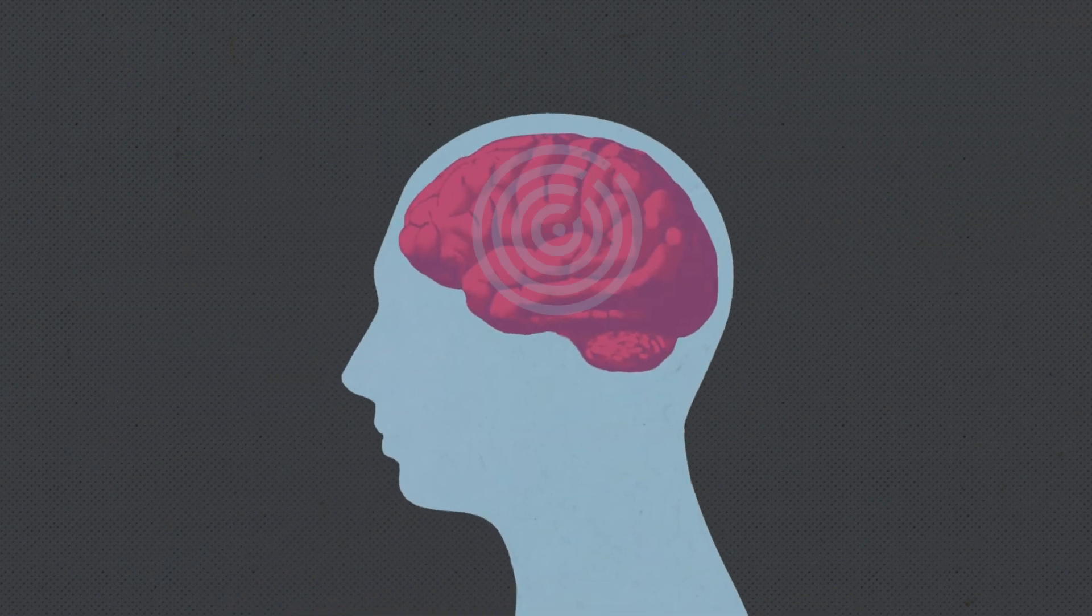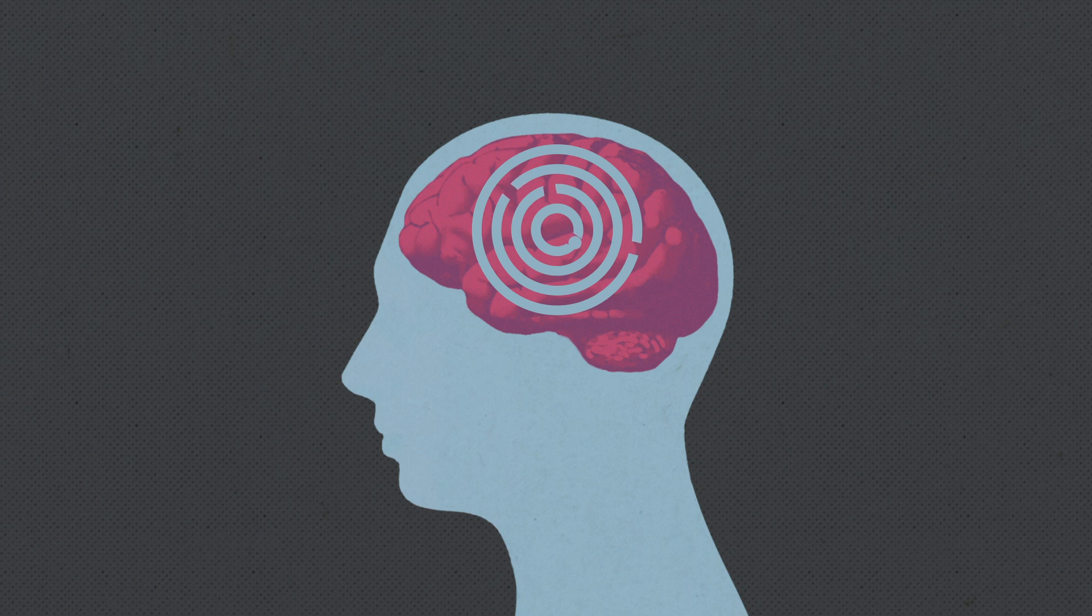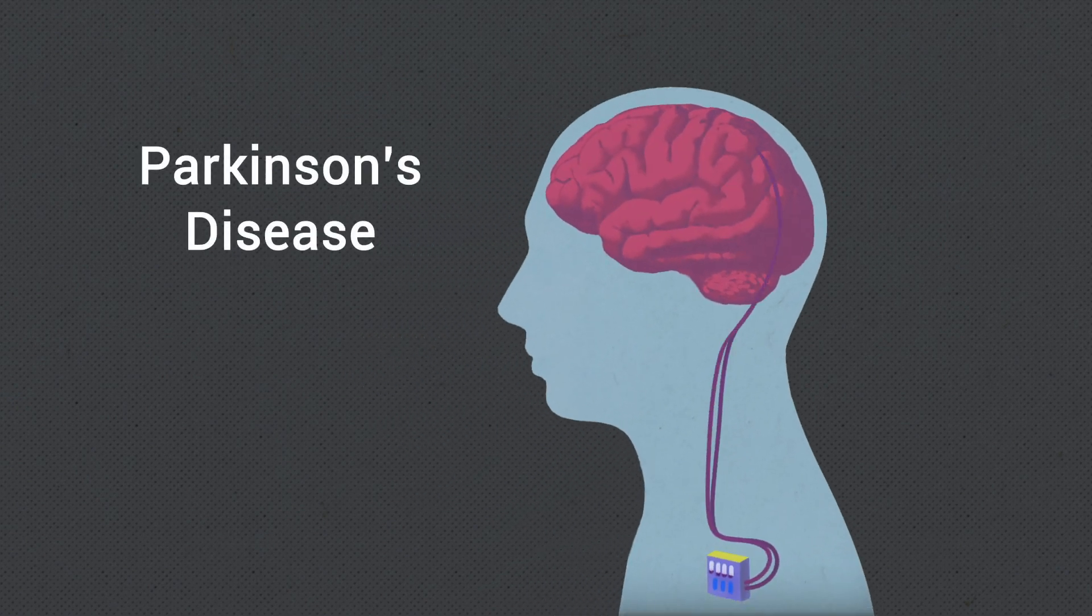Indeed, many neurological and psychiatric disorders stem from abnormal brain connectivity. Simple forms of brain stimulation are already used to treat certain neurological disorders such as Parkinson's disease.